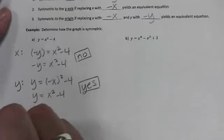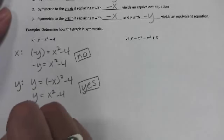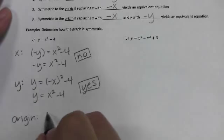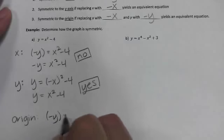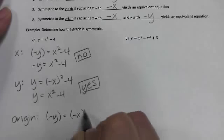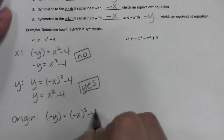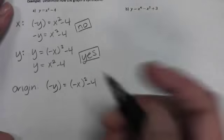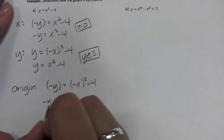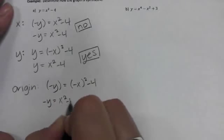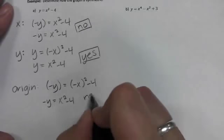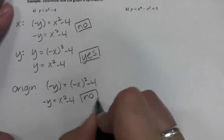Checking symmetry to the origin: replace y with negative y and x with negative x and simplify. That result is not the same as the original, so no — not symmetric to the origin.